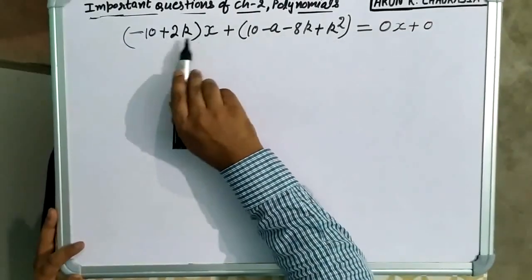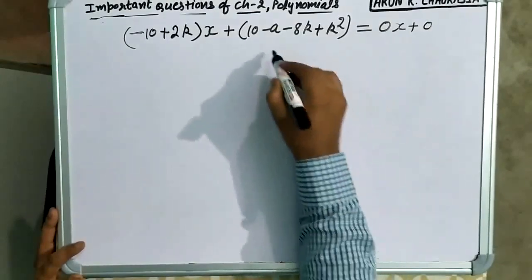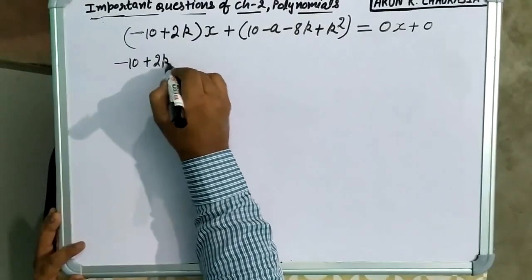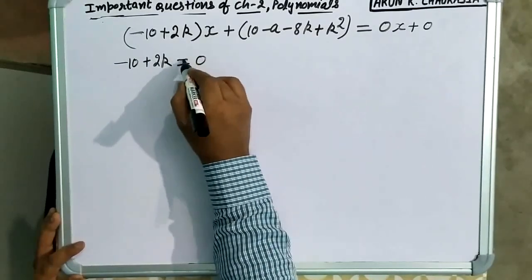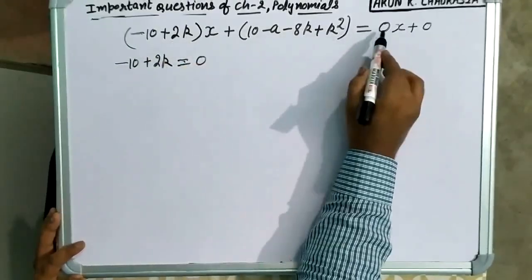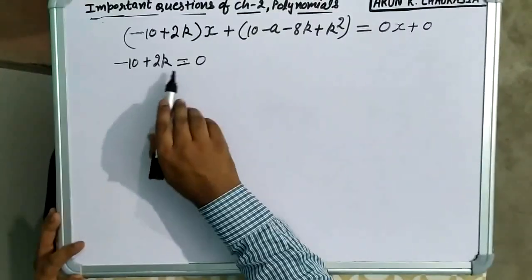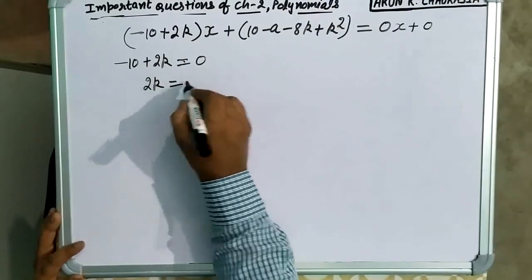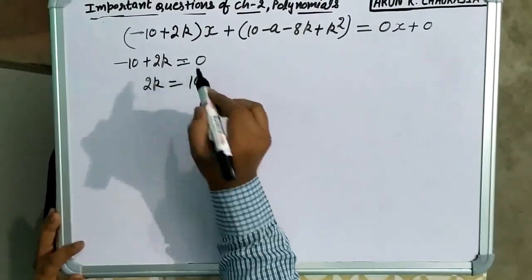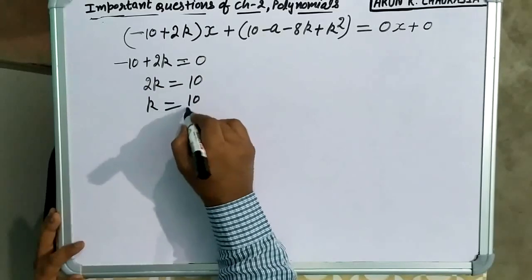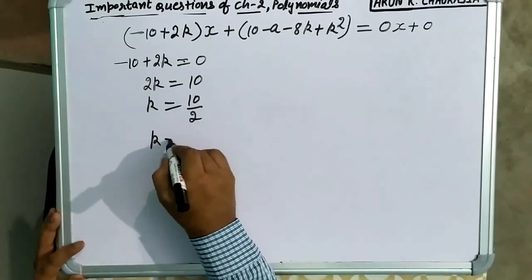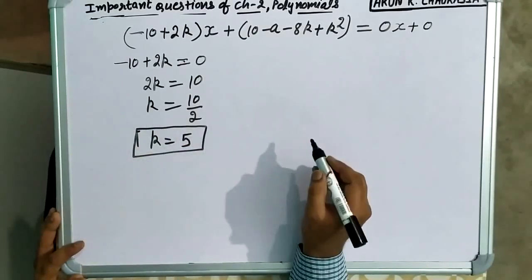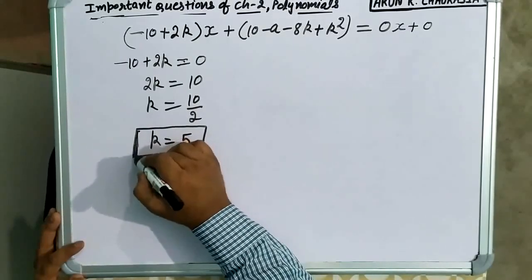x का coefficient compare करते हैं: minus 10 plus 2k equal to 0, x का coefficient दोनों सेम होने चाहिए, तो equal to 0 आएगा. 2k equal to 10, k equal to 10 upon 2, k equal to 5. तो यह k की value हमारे पास आजाएगी: k equal to 5.